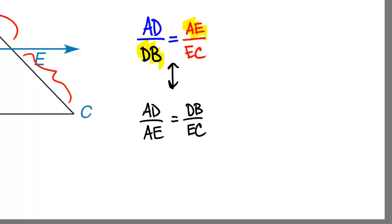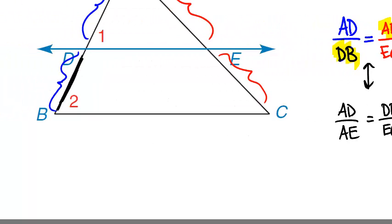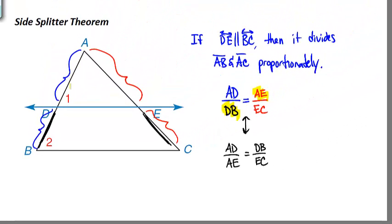And that's going to be the same ratio as if we take this bottom segment DB and set it up to be in ratio with the bottom segment on the other side, EC. So not only can we set up a ratio from the top left to the bottom left and set that equal to the top right and the bottom right, we can also set up a ratio of left to right and then the other matching left to right. And it depends on the given information on which one of those proportions you're going to want to use.